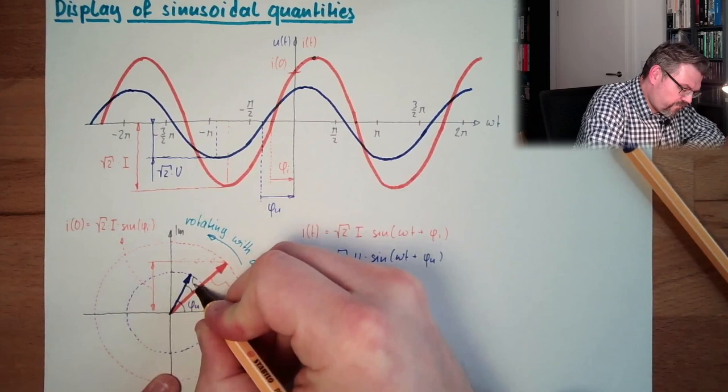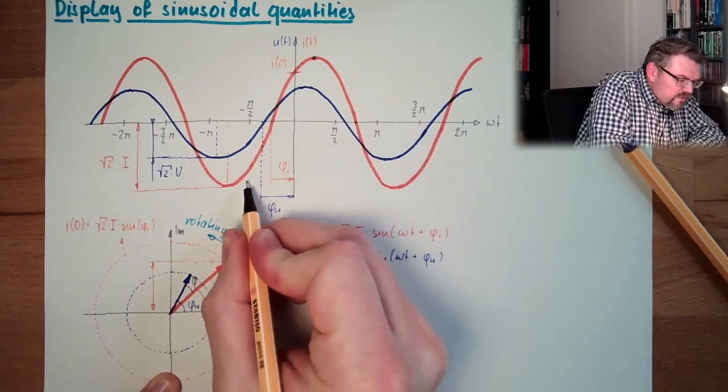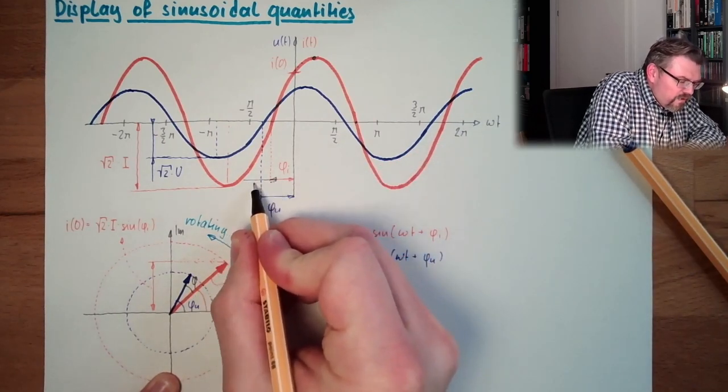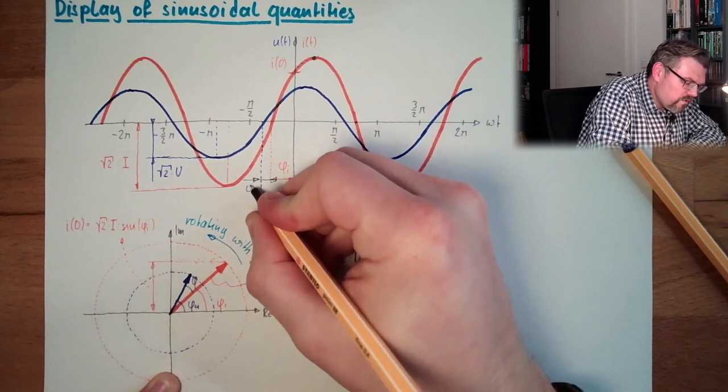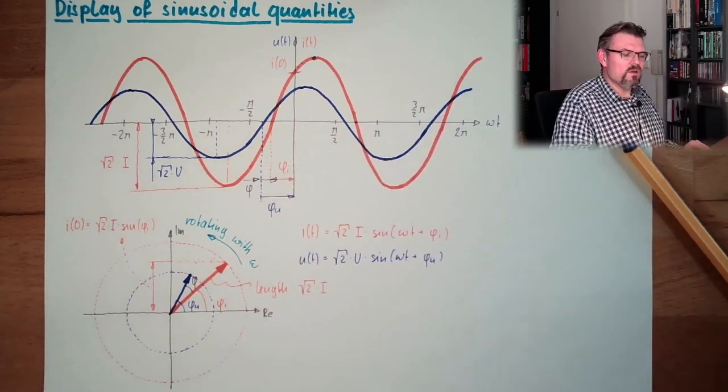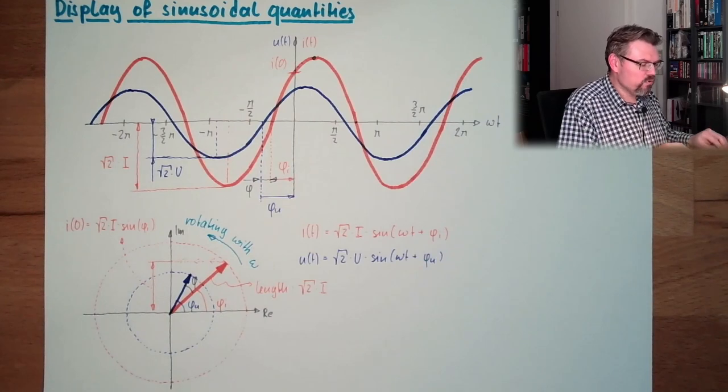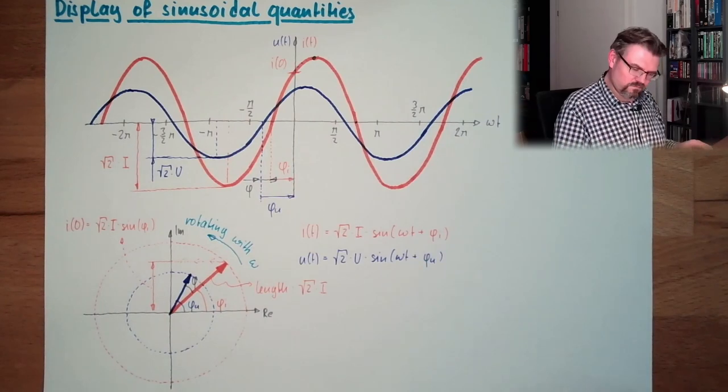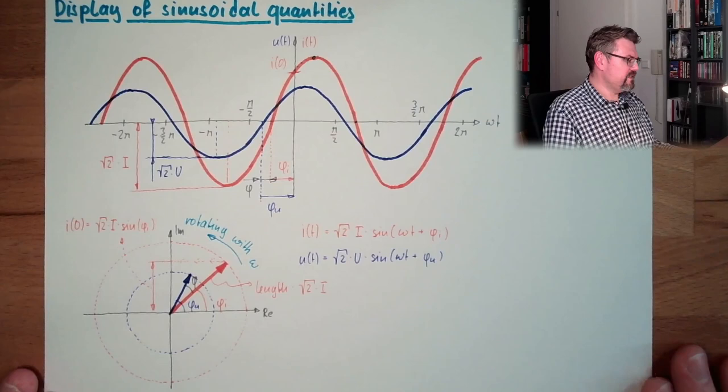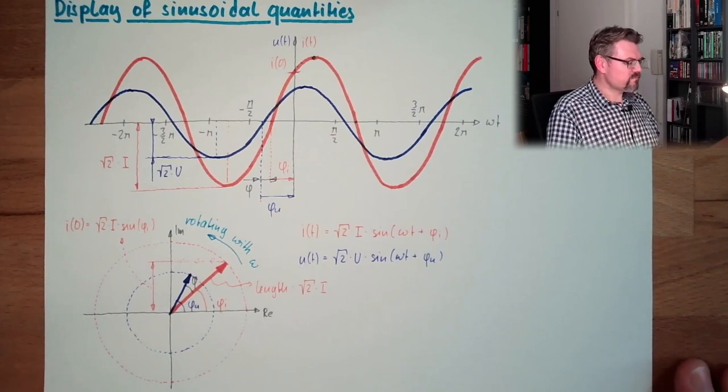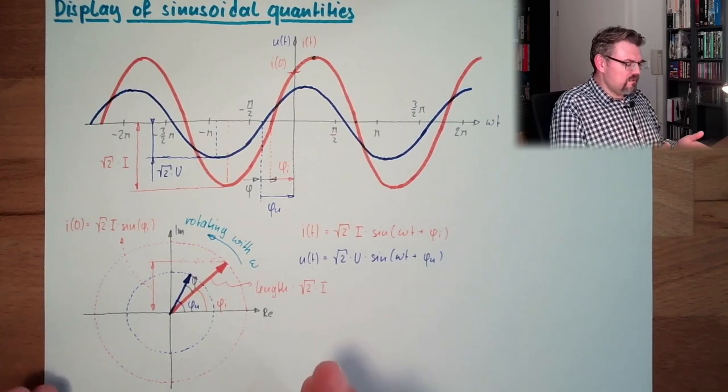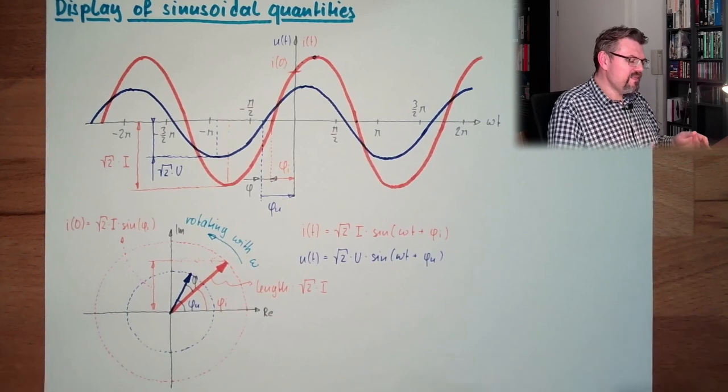This is, we have this phi we have here. This is the angle between current and voltage. We call it phase. It's phase angle. You see, it's rather easy.